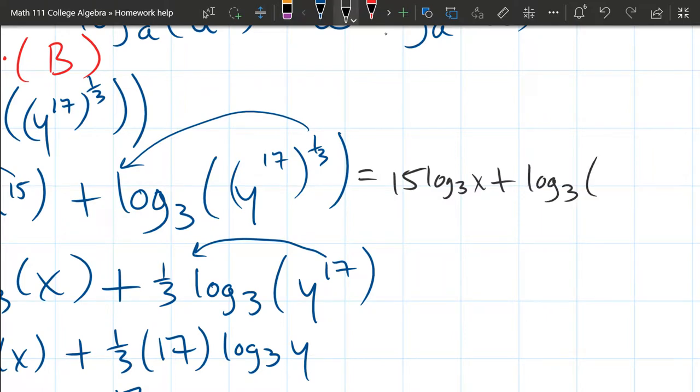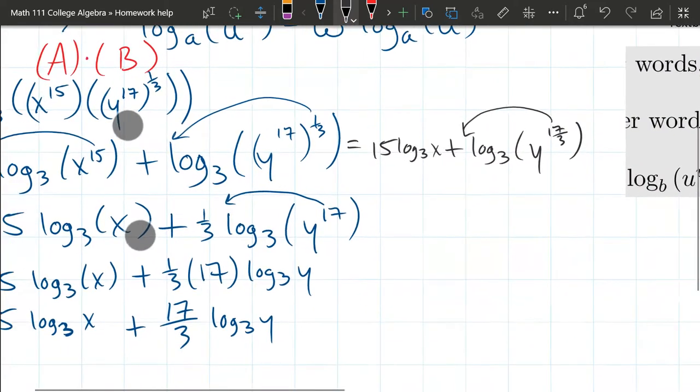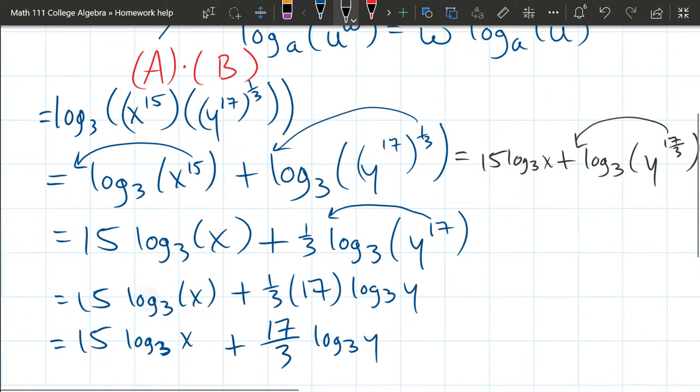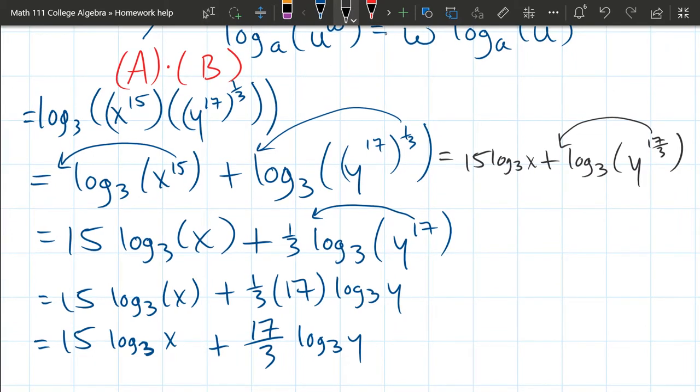So this is log 3 of Y. If we multiply 17 and a third, we have 17 thirds. And what happens on the next step? Your 17 thirds comes out in front and you're going to get exactly what we have on the bottom here. So you don't have to go in the order I presented in blue. You could use the properties of exponents, combine those, and then pull that exponent out in one step. It's up to you.